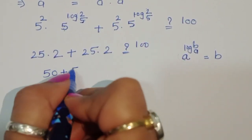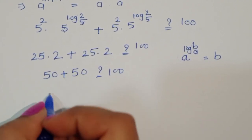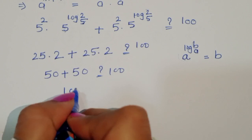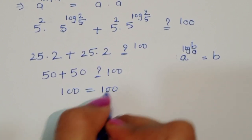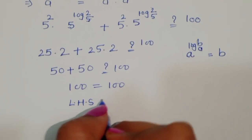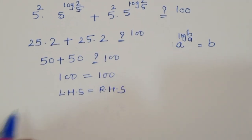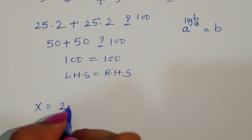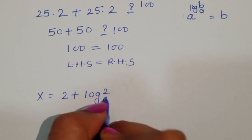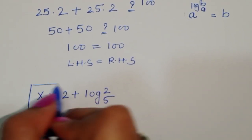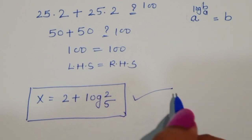50 plus 50 is 100, which is equal to 100. So LHS equals RHS, confirming that x = 2 + log₅2 is the correct solution for this equation. Thank you.